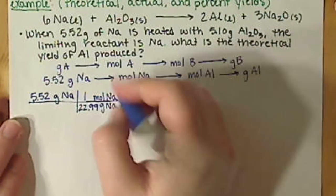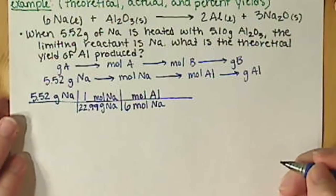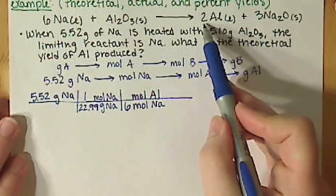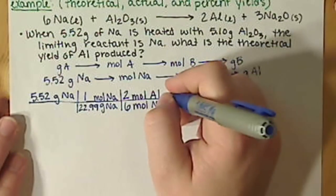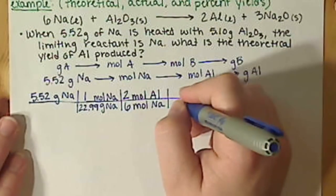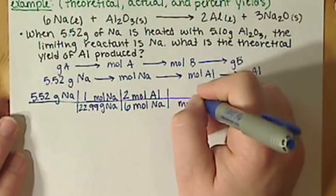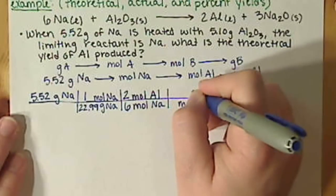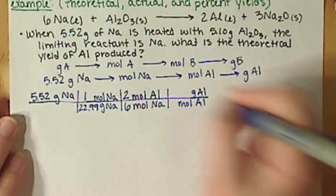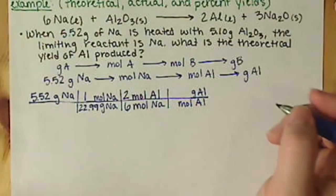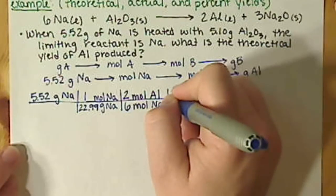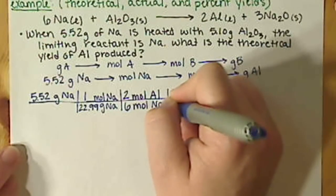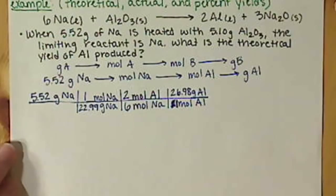So, we have a 6 in front of sodium. So, that gets a 6. We have a 2 in front of aluminum. So, 2 in front of aluminum. And then, our final step is to go from moles of aluminum to grams of aluminum. And we consult our periodic table for that. And we have 26.98 grams of aluminum per one mole of aluminum.